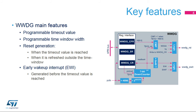The window watchdog offers several features. The user can program the timeout value and the window width according to application needs. It can generate a reset under two conditions: when the down counter value becomes less than or equal to 0x3F, or when the watchdog is refreshed outside the time window. It can also generate an early wake-up interrupt when the down counter reaches 0x40, which can be used to reload the down counter to avoid a reset or to manage system recovery and context backup operations.